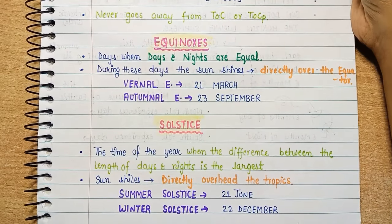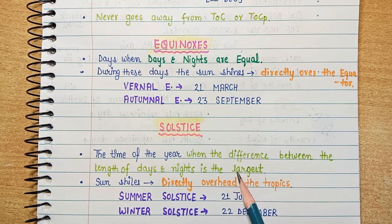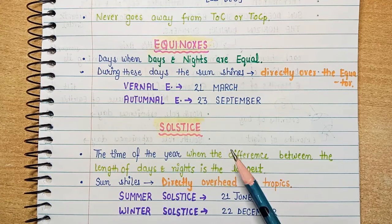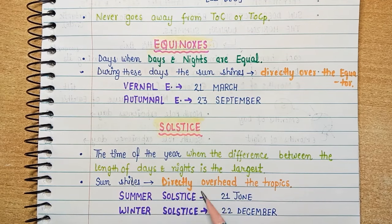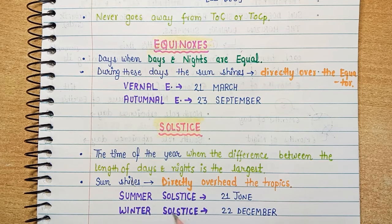Now we will read about solstice. In solstice there is the maximum difference between day and night. For example, days are very short and nights are very long — when does this happen? We will study all of that. At this time the sun shines directly overhead the tropics — the sun is directly over the Tropic of Cancer or the Tropic of Capricorn. We call this summer solstice and winter solstice. The day in summer when there is maximum difference between day and night, and the day in winter when there is maximum difference between day and night.